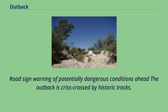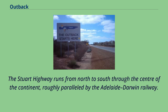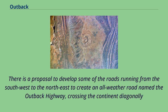The outback is crisscrossed by historic tracks. Most of the major highways have an excellent bitumen surface and other major roads are usually well-maintained dirt roads. The Stuart Highway runs from north to south through the centre of the continent, roughly paralleled by the Adelaide–Darwin Railway. There is a proposal to develop some of the roads running from the southwest to the northeast to create an all-weather road named the Outback Highway, crossing the continent diagonally.